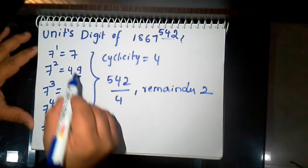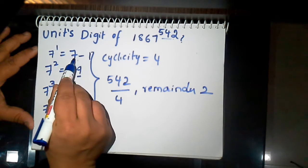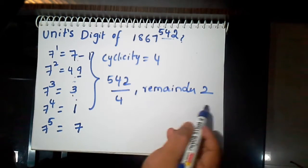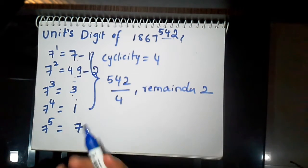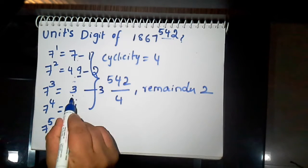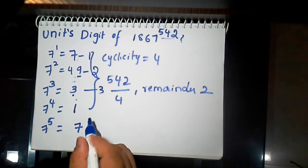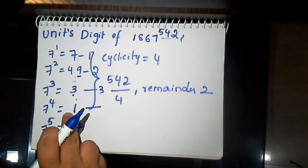Now if you get remainder 1, the unit's digit is 7. If you get remainder 2, the unit's digit is 9. If you get remainder 3, you will get unit's digit 3. If you get remainder 0, you will get unit's digit is 1.